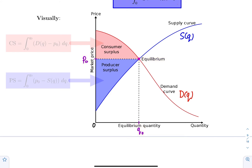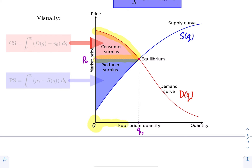The first area we want to compute is the one shown in red. This area is the area between the demand curve and the line P = P0, from Q = 0 to Q = Q0. That area is called the consumer's surplus, denoted CS. It tells us how much money was saved by the consumers who were willing to buy the product at a higher price than P0.